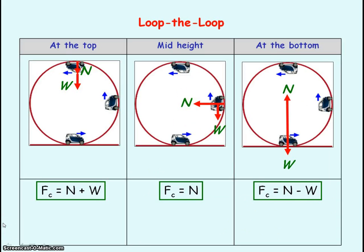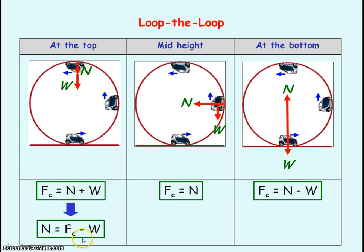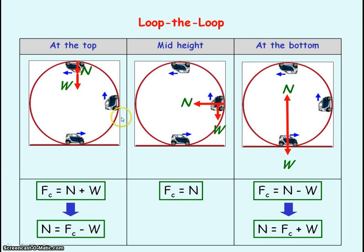This slide is summarising the loop-the-loop for at the top, mid-height and at the bottom. When the car is at the top of the loop, the normal reaction force will equal the centripetal force minus the weight. And when the car is at the bottom of the loop, the normal reaction force equals the centripetal force plus the weight. If we are assuming that the car is travelling at a constant speed around the loop, then the centripetal force remains the same.